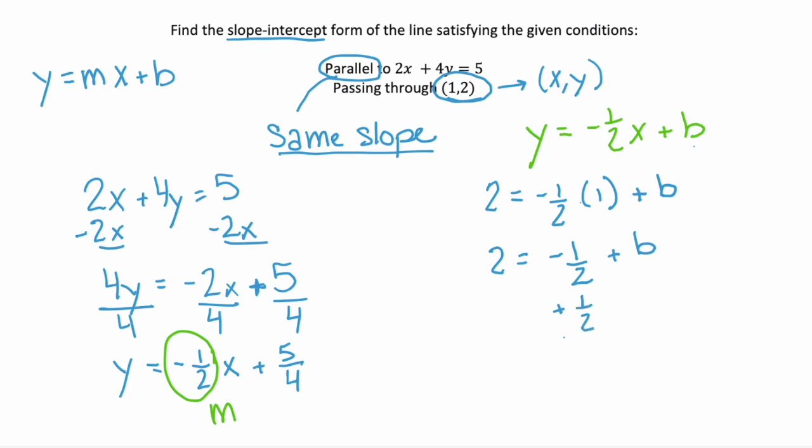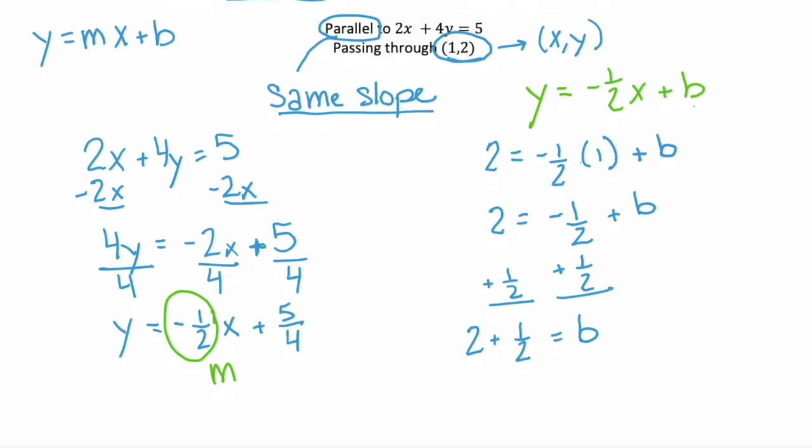And to isolate b, we need to add 1 half to both sides. So we have 2 plus 1 half equals b. And 2 plus 1 half simplifies. We'll put it in fraction form. So 2 is actually 4 over 2 plus 1 half or 5 halves equals our b.